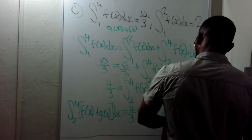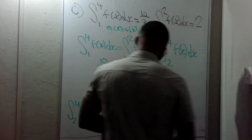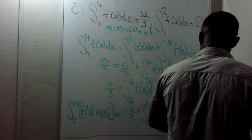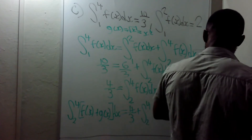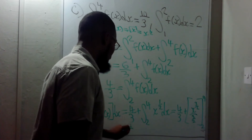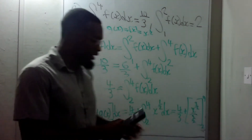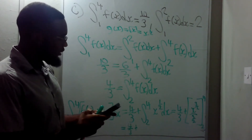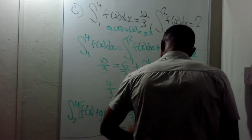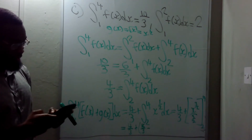Integrating x^(1/2): add 1 to the power to get x^(3/2), then divide by 3/2, evaluated from 2 to 4. So we have 4/3 plus [x^(3/2) / (3/2)] from 2 to 4. Plugging in 4: 4^(3/2) divided by 3/2 gives 5 and 1/3, which is 16/3. Then we plug in 2: 2^(3/2) divided by 3/2.